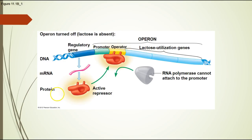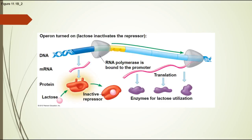So let's see what it looks like. Here's our sequence of DNA — the area in light blue is the operon. The regulatory gene is somewhere upstream and codes for the repressor, which attaches to the operator preventing RNA polymerase from transcribing. When lactose is present, it binds to the repressor and inactivates it, causing it to fall off so RNA polymerase can bind the promoter and transcribe the genes into the enzymes needed to use lactose.